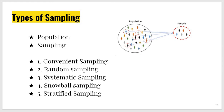Snowball sampling means it is difficult to find the sample. For example, if you are conducting research on drug addicts — they cannot be easily available. You contact one person and ask if they know other drug addicts; that person tells you one or two other names, then you contact them, and in this way your sampling increases. Stratified sampling means grouping — you make groups on the basis of gender, age, language, or regional affiliation.